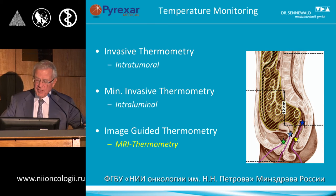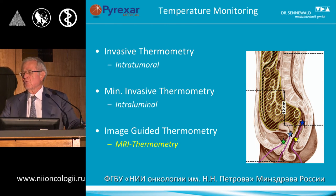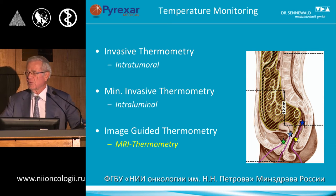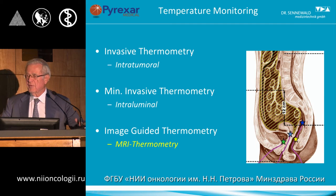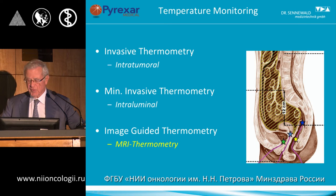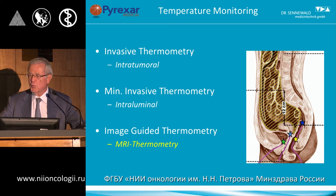Minimally invasive thermometry is best described by using body orifices for probe placement — placing a catheter inside the rectum, vagina, and bladder — to obtain point-wise temperature patterns. As pointed out earlier, it is paramount that temperature control and monitoring is executed. The most sensitive temperature reading is normally used for steering the heating of the tumor.